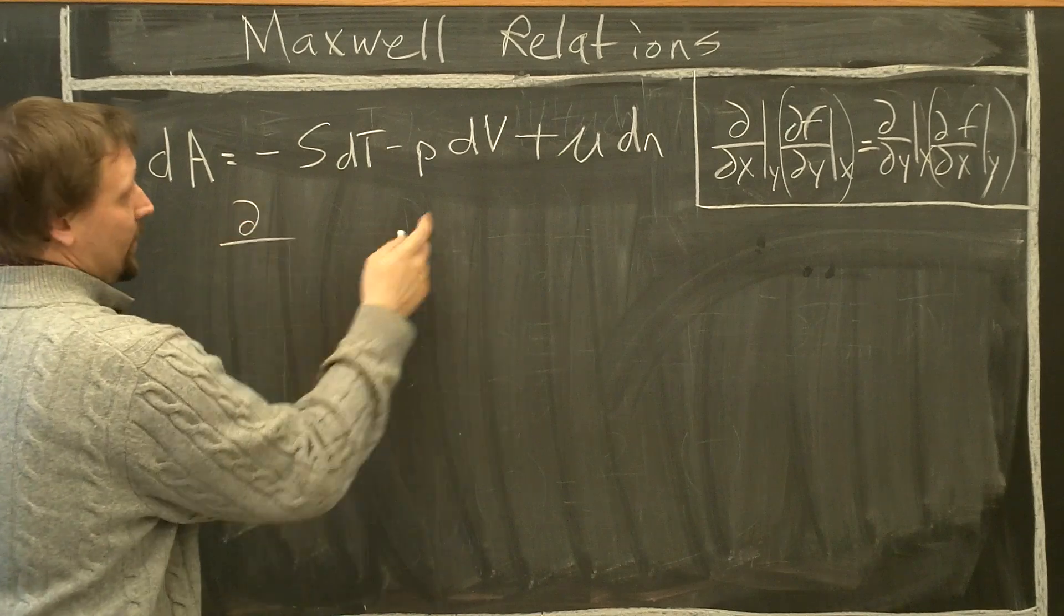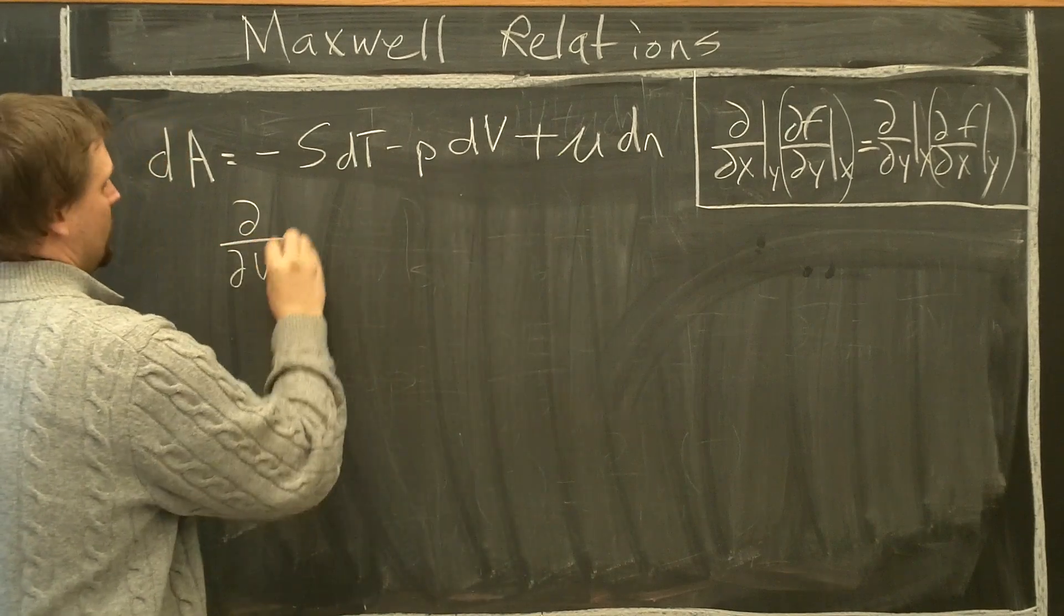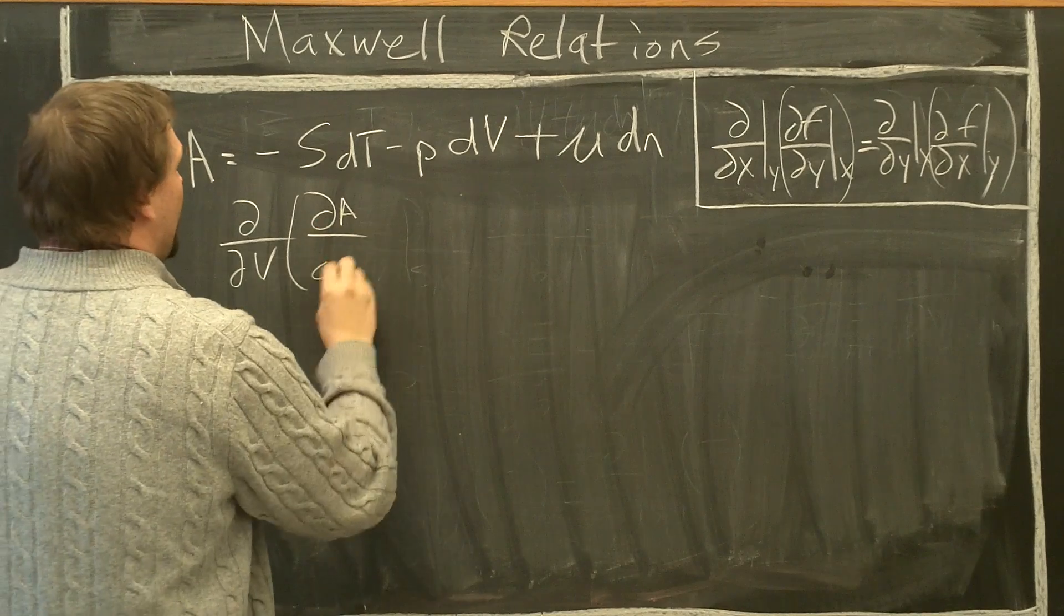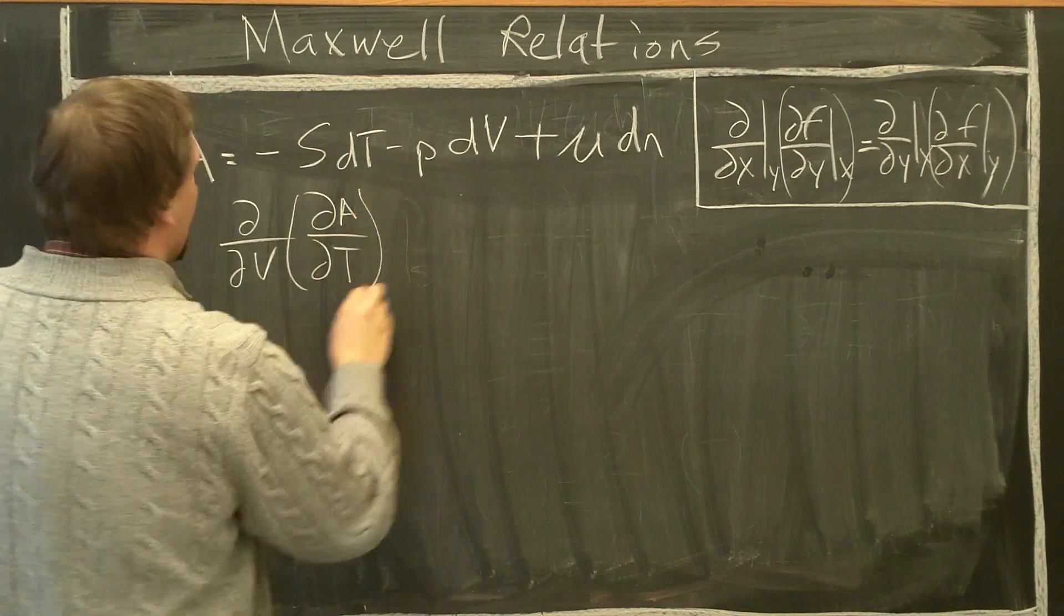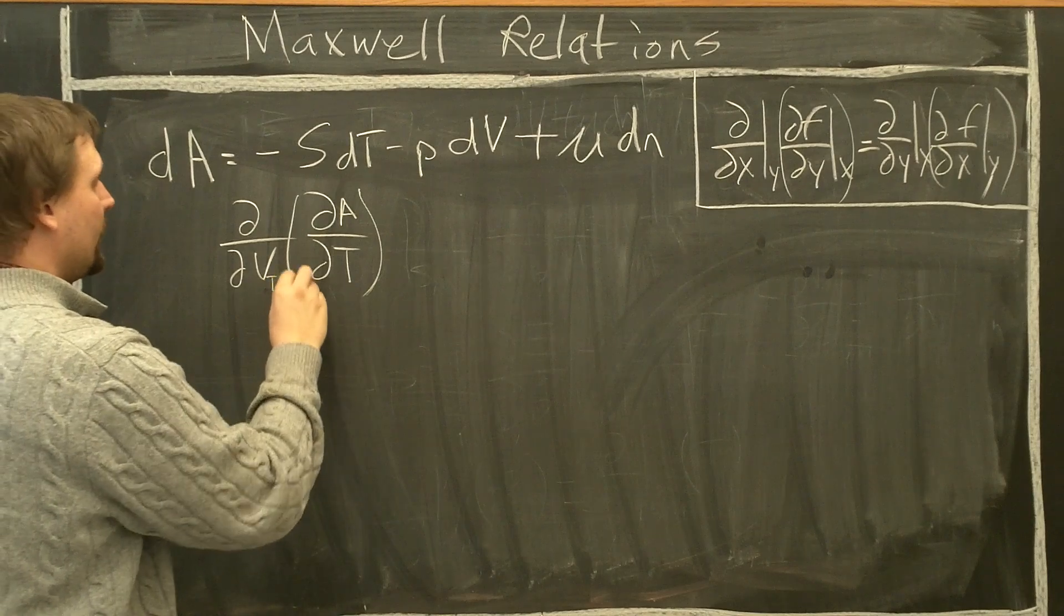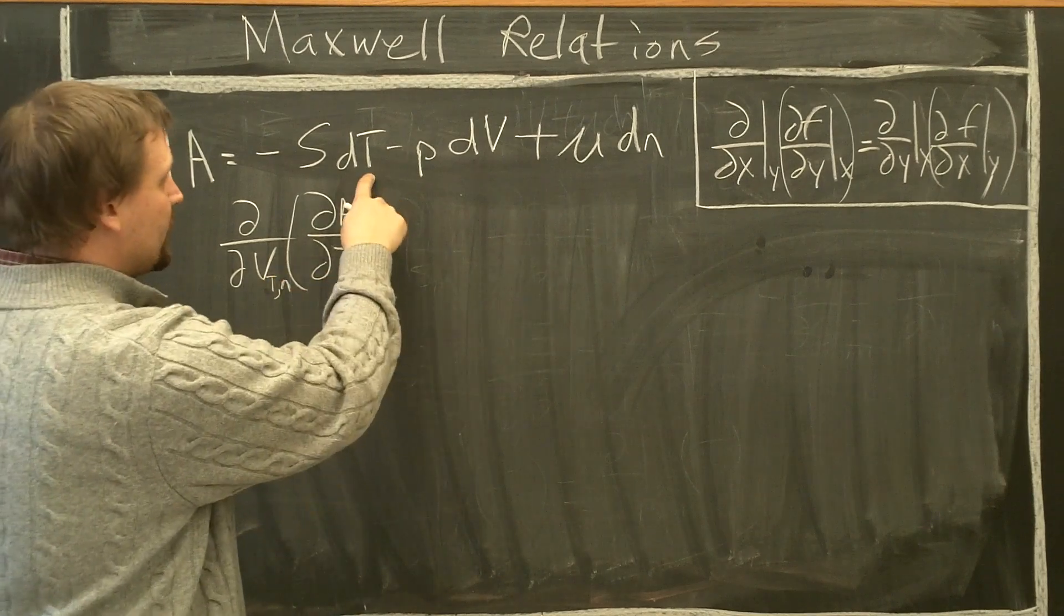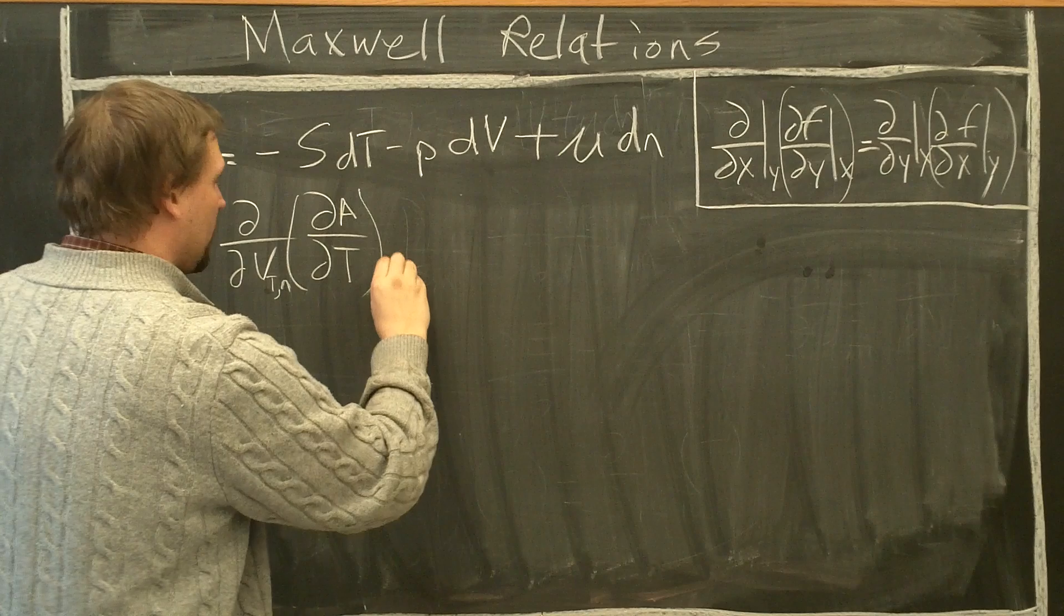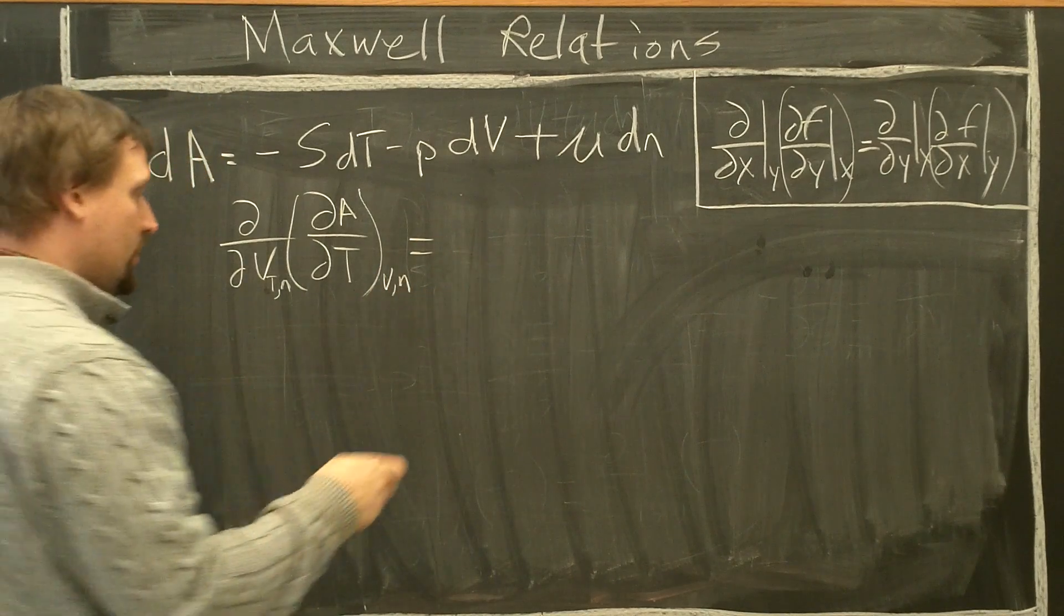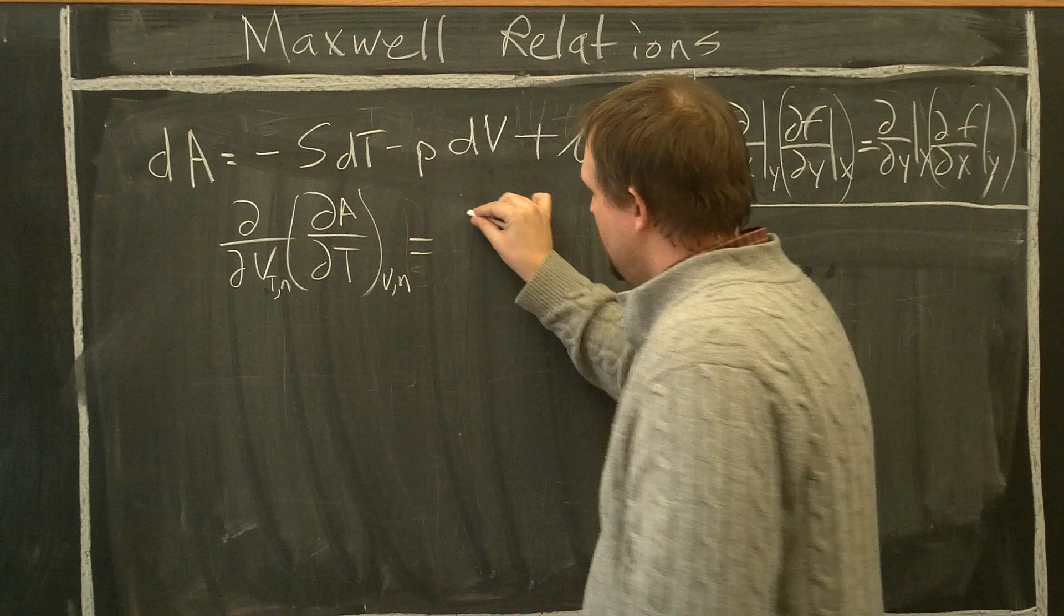So what we have? Partial with respect to B of partial A with respect to T, here with B kept fixed, we have T and N constant. With T kept fixed, we have B and N constant. And this must equal this changed order of differentiation.